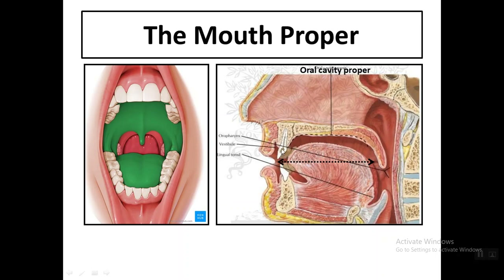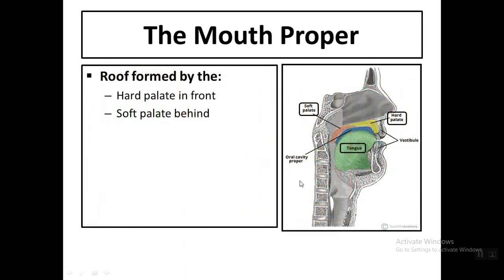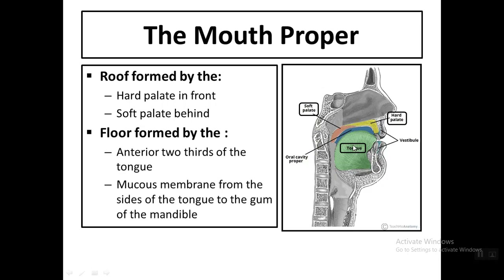The mouth proper extends from the teeth and gum to the oropharyngeal isthmus. It has a roof and a floor. The roof is formed by the palate — the hard palate and soft palate. The floor is formed by the anterior two-thirds of the tongue and the mucous membrane reflected from the under surface of the tongue to the floor of the mandible.